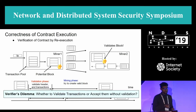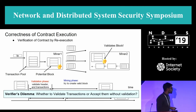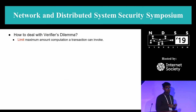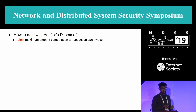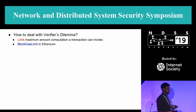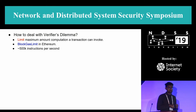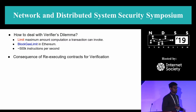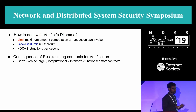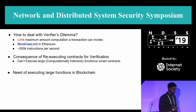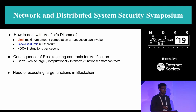An honest miner faces a dilemma of whether to validate transactions in a block or simply accept it. Currently, major blockchains handle this by limiting the maximum computation a transaction can execute. For example, Ethereum quantifies this using the block gas limit, which limits Ethereum to executing around 500,000 instructions per second — significantly less than a CPU's capability of billions of instructions per second. This limits the blockchain from executing computationally intensive contracts.